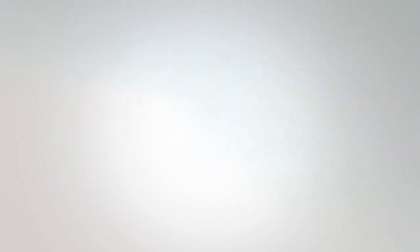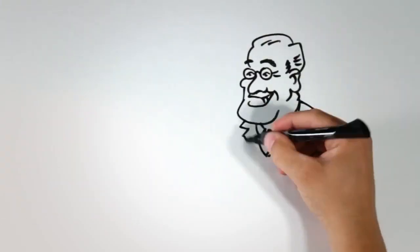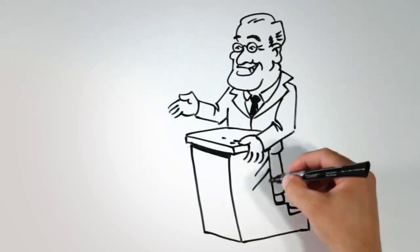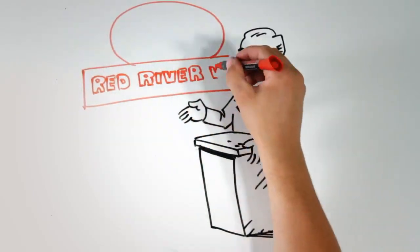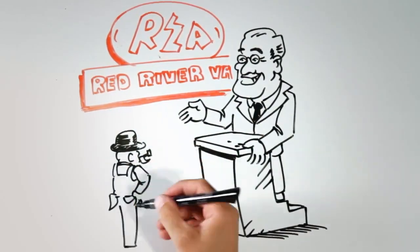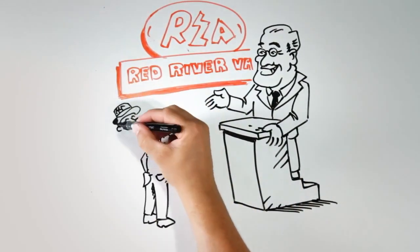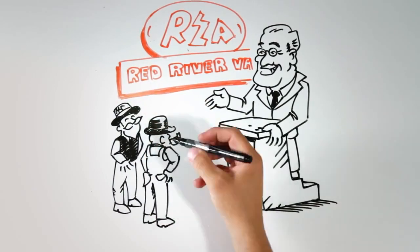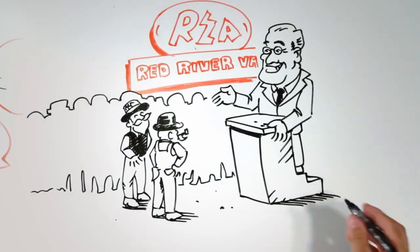The idea caught on. Here in the U.S., President Roosevelt gave electric cooperatives a jump start with the founding of the Rural Electrification Administration, the REA, telling American farmers and ranchers, if you want electricity, you can do it yourselves. And they did.